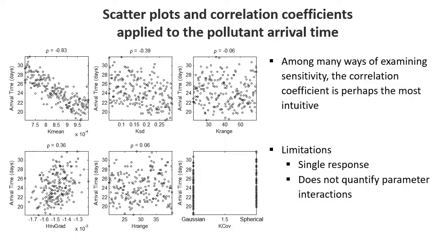We notice that K-mean gets a very high negative correlation — that makes sense, because increasing K-mean means decreasing arrival time. As we progress, we see less and less sensitivity. The problem is that by this approach we're not looking at interactions, our response is a single-variant response, and it's very difficult to understand the impact of discrete variables, as it is particularly meaningless to calculate sensitivity on discrete variables.